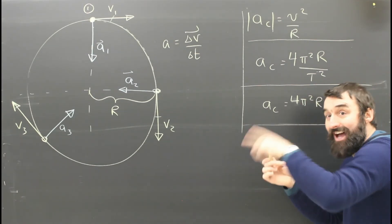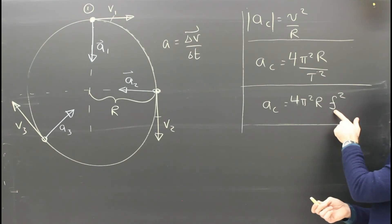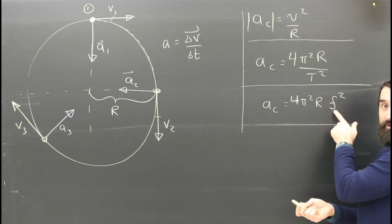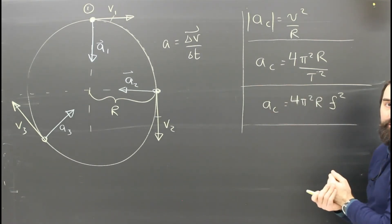Sometimes when things do really fast circular motion, we don't talk about the period of their motion, but we talk about the frequency of their rotation. In which case, since frequency is 1 over T, the formula becomes 4π²r f². Frequency squared. No big deal.